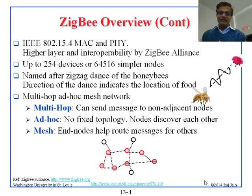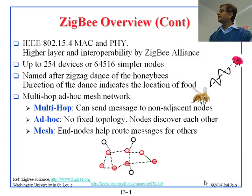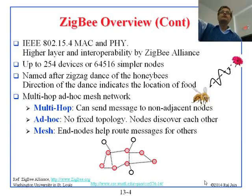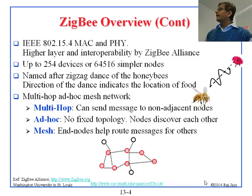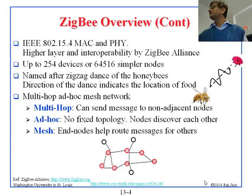There are all kinds of stories about why it is called Zigbee. Now we know Zigbee — if we know the dance. Multi-hop means that you can send a message to a non-adjacent node; it can go through intermediate nodes. Ad-hoc means the topology is not fixed — people are moving, or dying, or coming in — so it is a very dynamic topology.